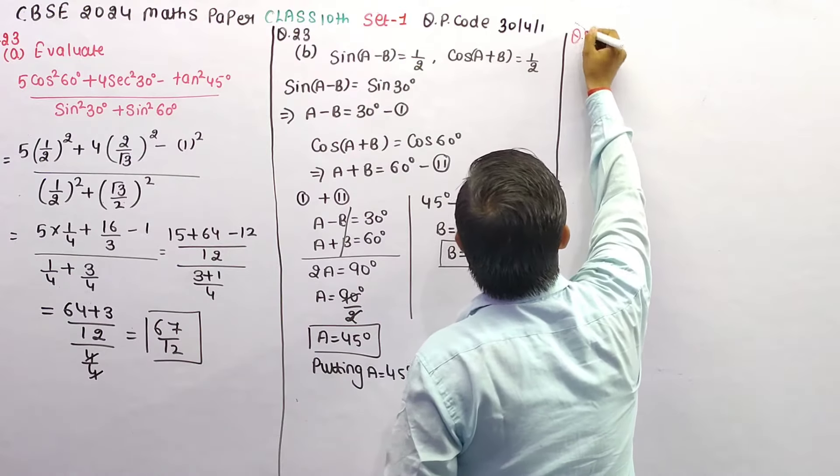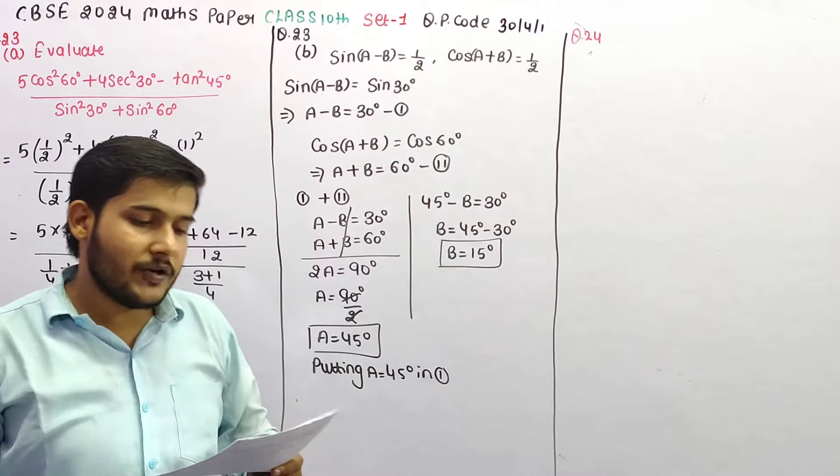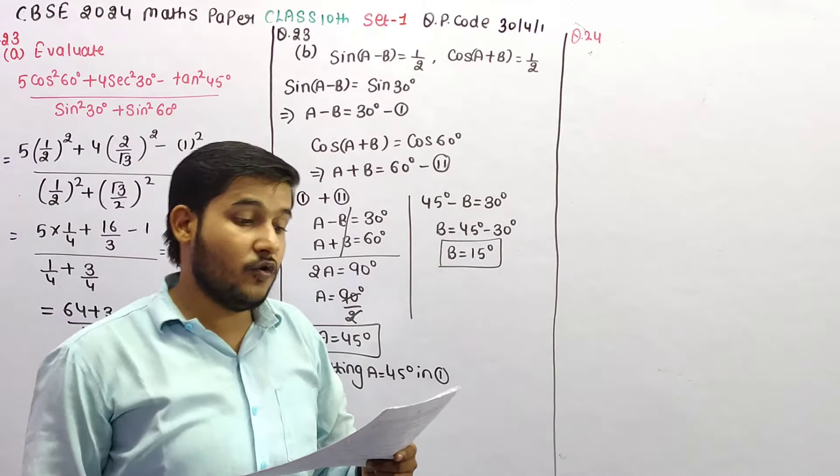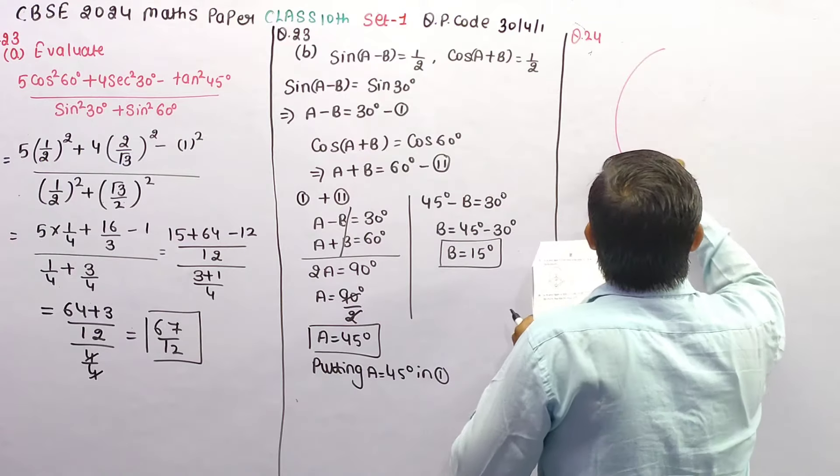Question 24. In the given figure, O is the center of circle. If AOD is 145, then find the value of X. We have a figure.